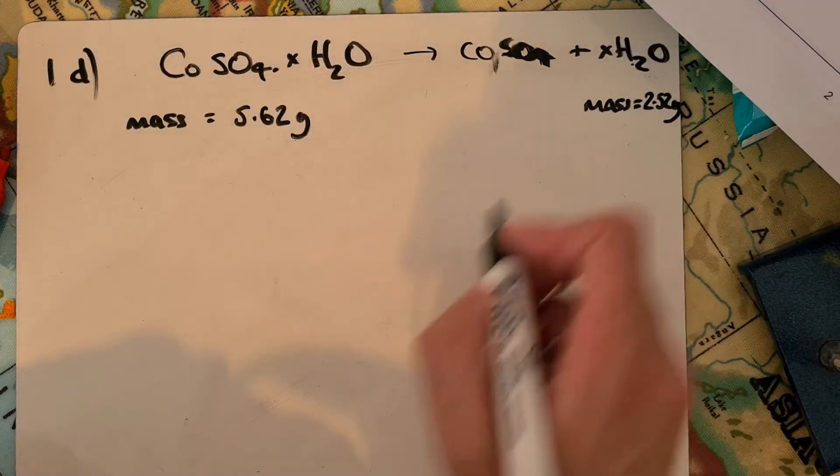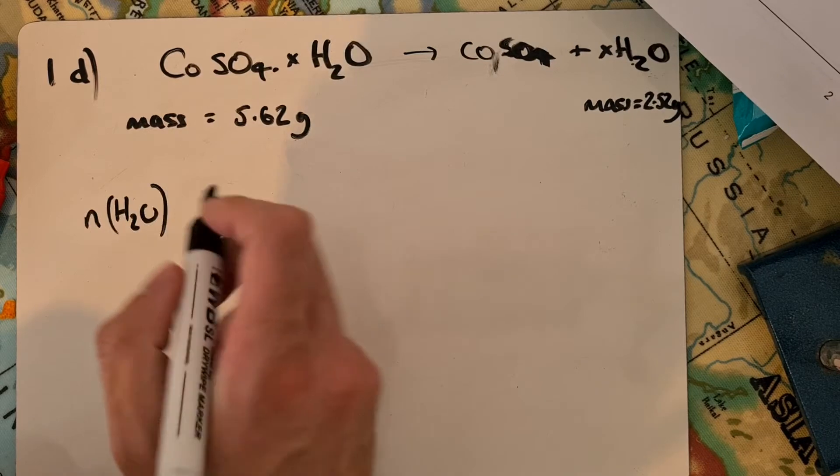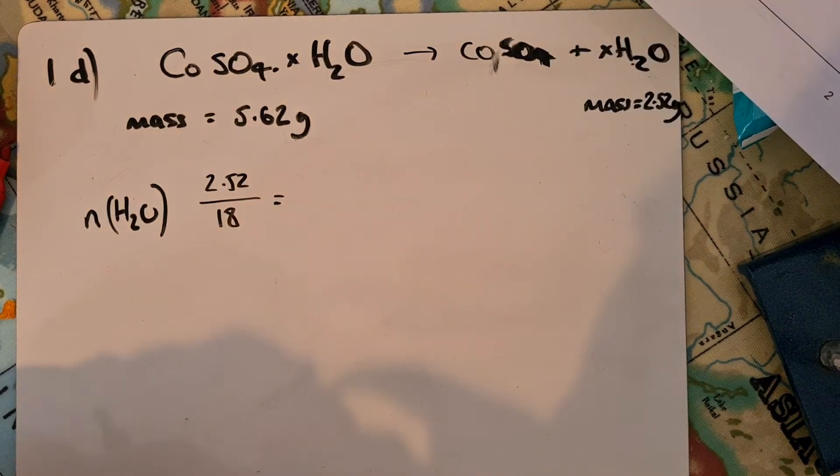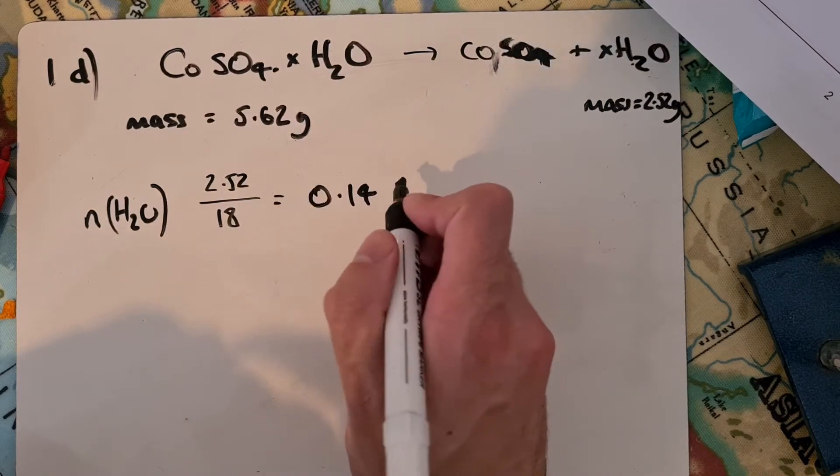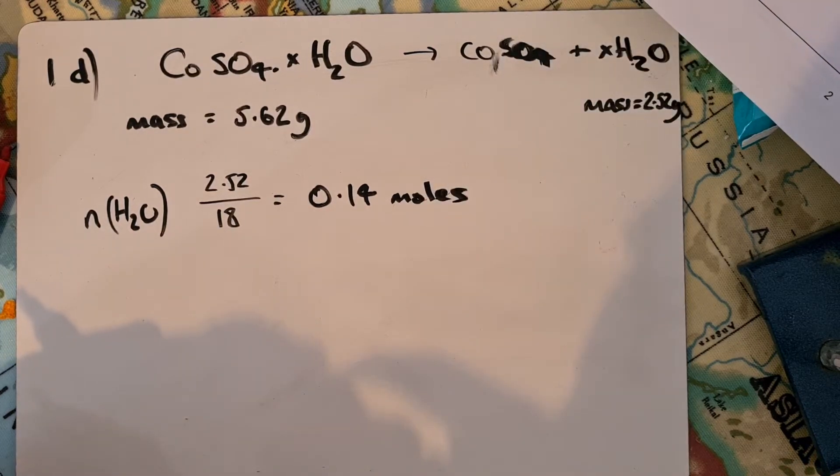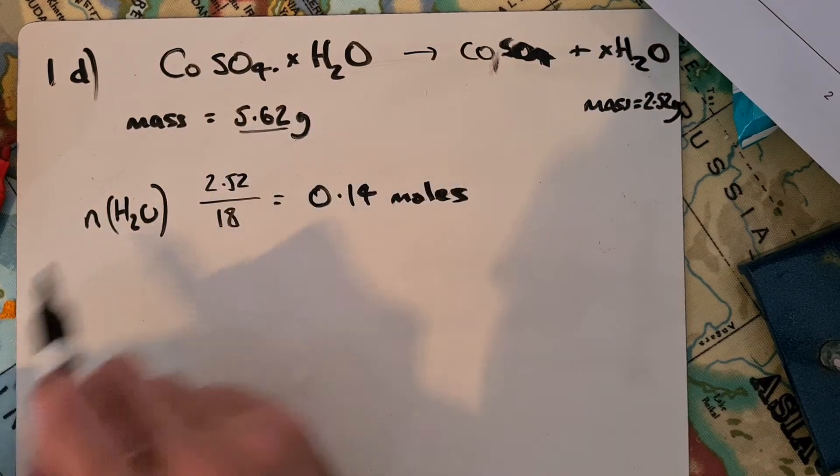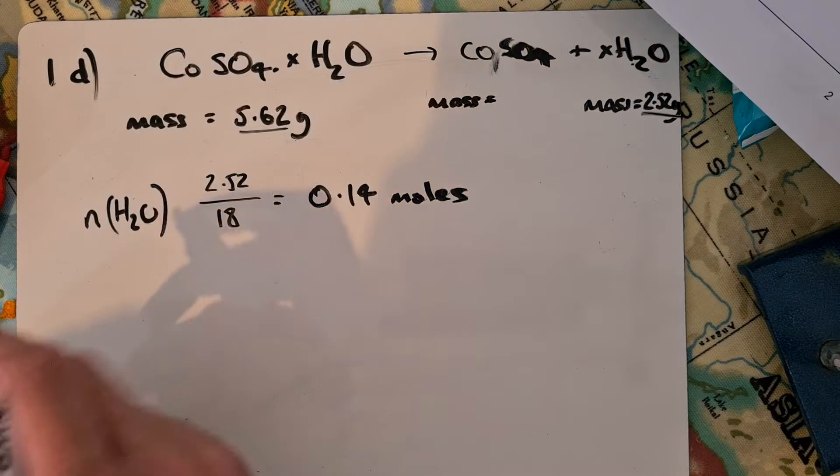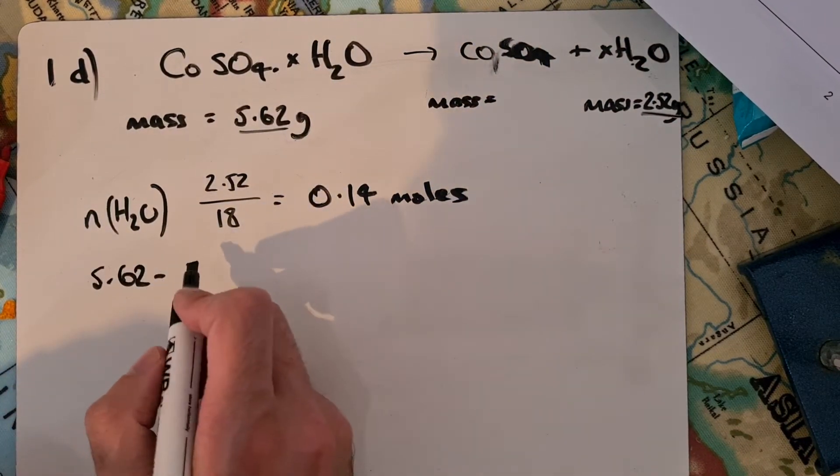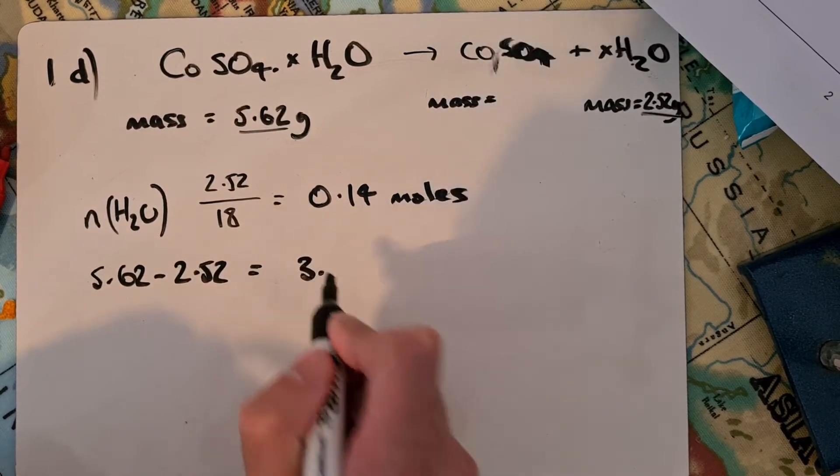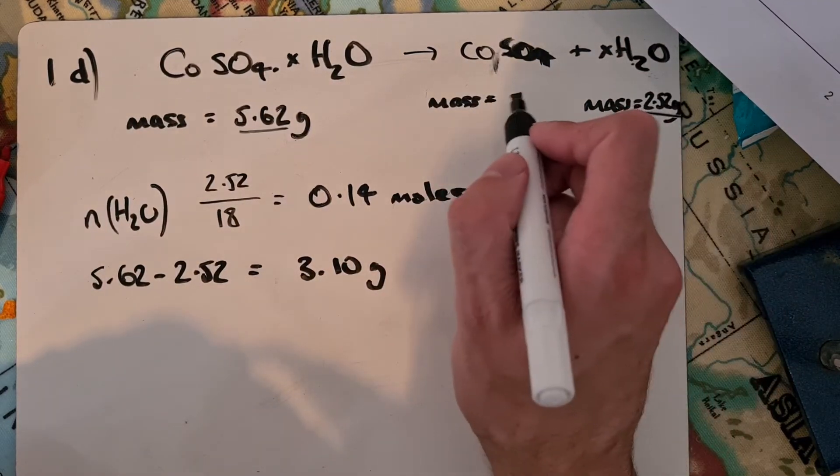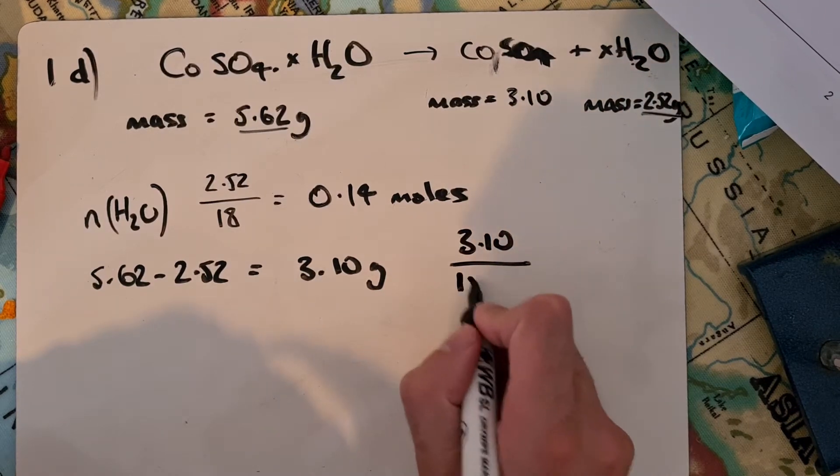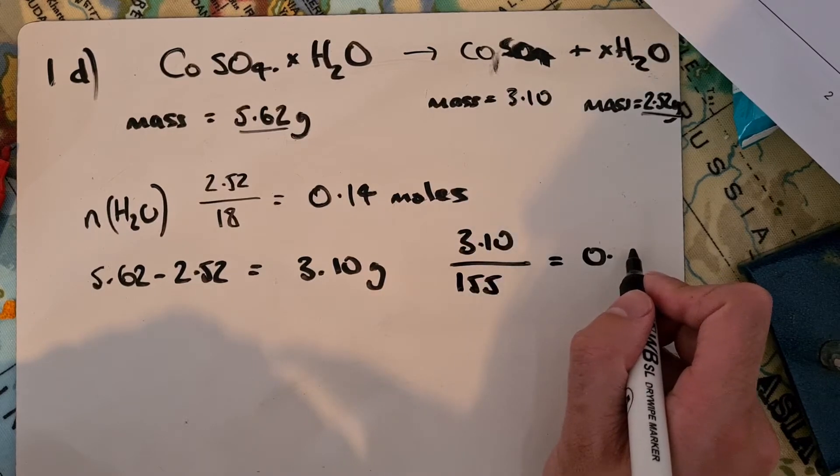I can work out the number of moles of water: 2.52 over 18 gives 0.14 moles. Next, I had 5.62 grams initially and 2.52 grams of water. I can work out the mass of cobalt sulfate without water: 5.62 minus 2.52 gives 3.10 grams. Then I can work out the number of moles: 3.10 over the MR of cobalt sulfate, which is 155, giving 0.02 moles.